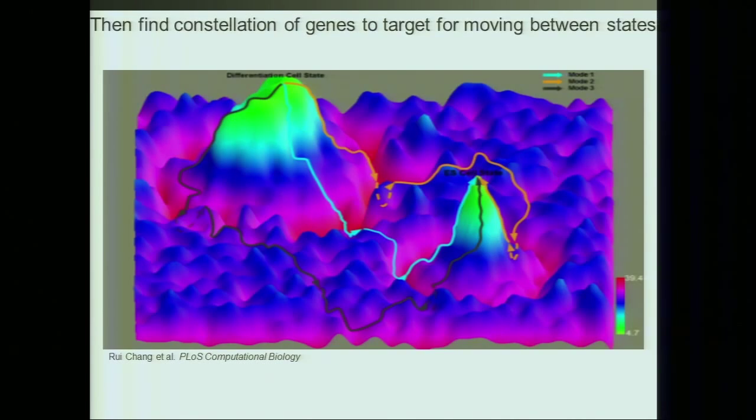We're now in a mode where we can take these networks and define the different states of a system through the probability structure that emerges from integrating all this data. Different mountains in this energy phase space reflect different states of the system, and the contours between them are the gene constellations that we know quantitatively how to knock down or up to move from one state to another. Once we start getting at this engineering within biology — running simulations in silico without doing all the experimentation — we can better direct lab and clinical studies. It's a truly exciting time.